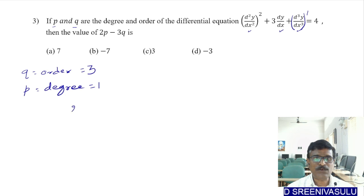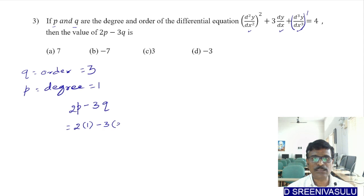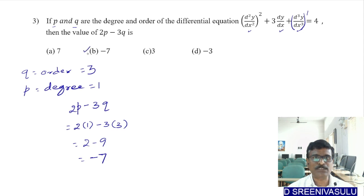Therefore 2p − 3q = 2(1) − 3(3) = 2 − 9 = −7. The correct option is B.